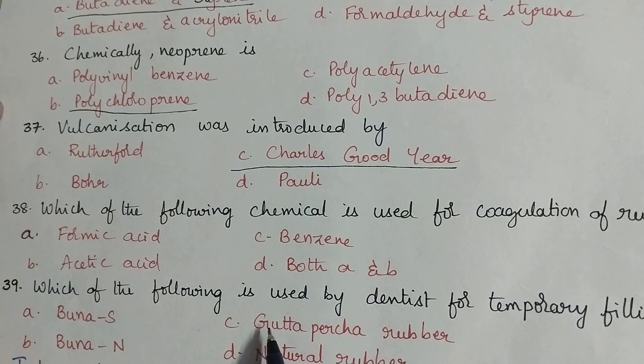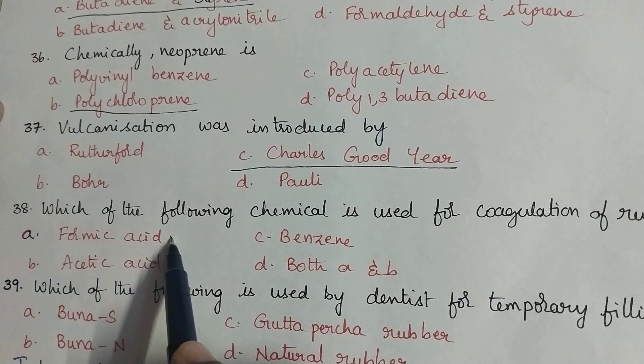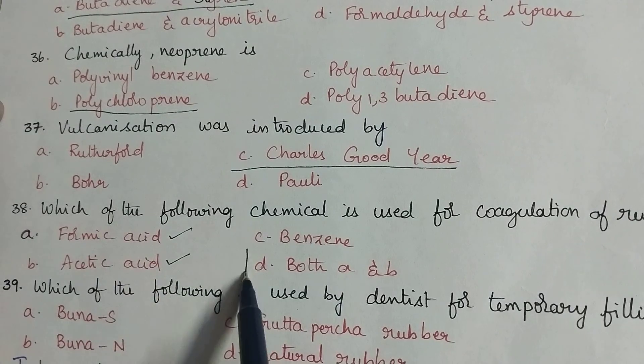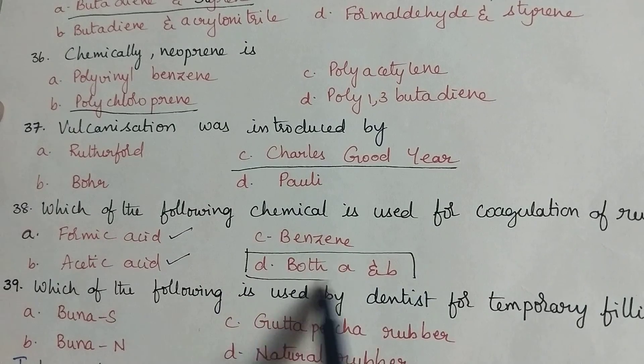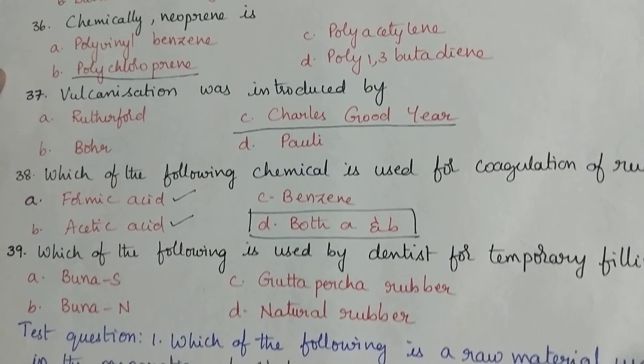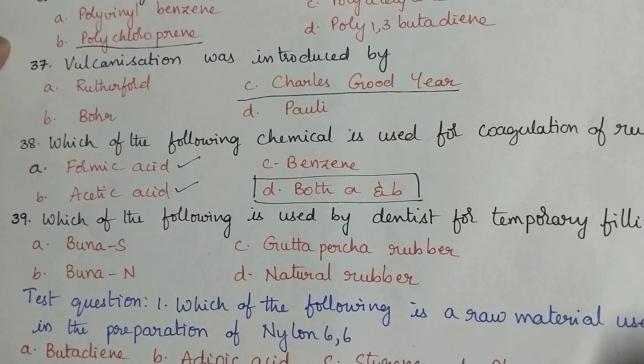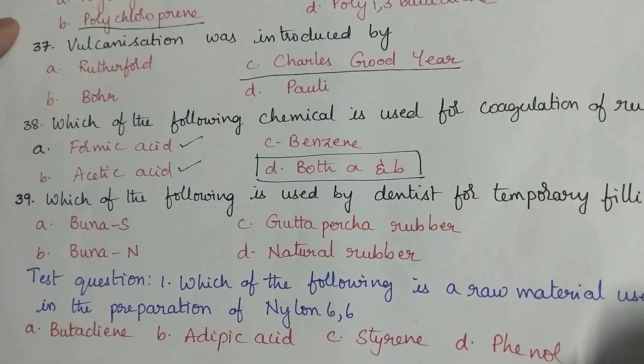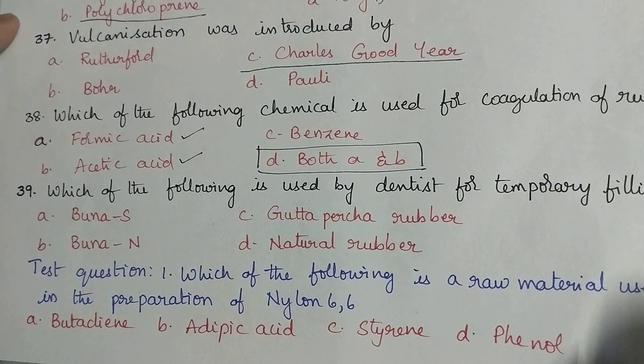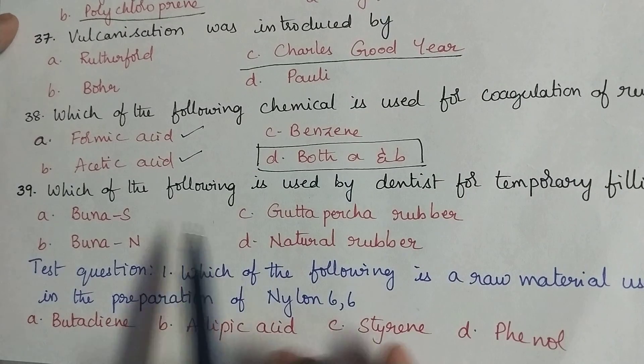Which of the following chemical is used for coagulation of rubber? During the coagulation of natural rubber both formic and acetic acids can be used. So option D is the right answer.